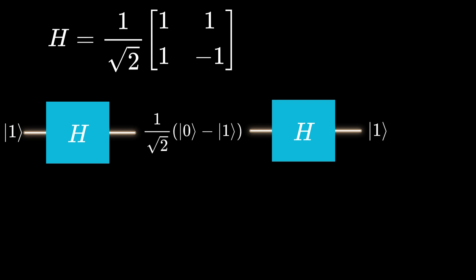Applying the Hadamard gate twice returns the initial input, functioning as the identity gate. This implies that the Hadamard gate is its own inverse.